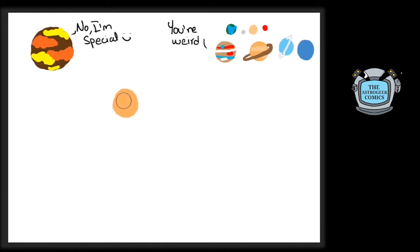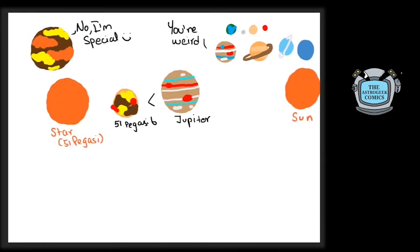The first exoplanet around a sun-like star, 51 Pegasi b, is a gas giant 0.45 times the mass of Jupiter. But unlike our gas giants, it sits so close to its star that it is tidally locked to the star, with one side constantly in day and the other constantly in night.